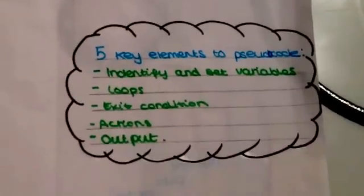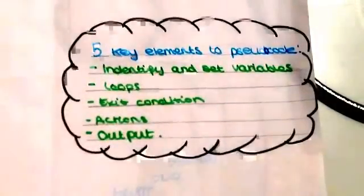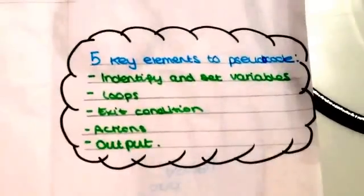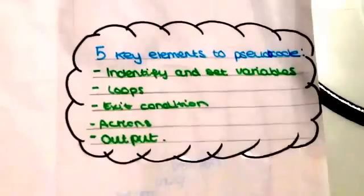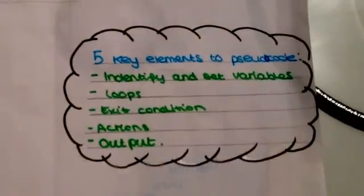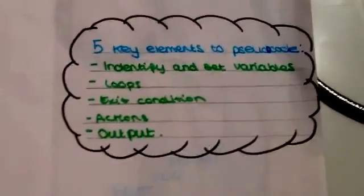To write out pseudocode you must do the following: 1. Identify and set variables, 2. Choose loop, 3. Exit condition, 4. Actions, 5. Output.